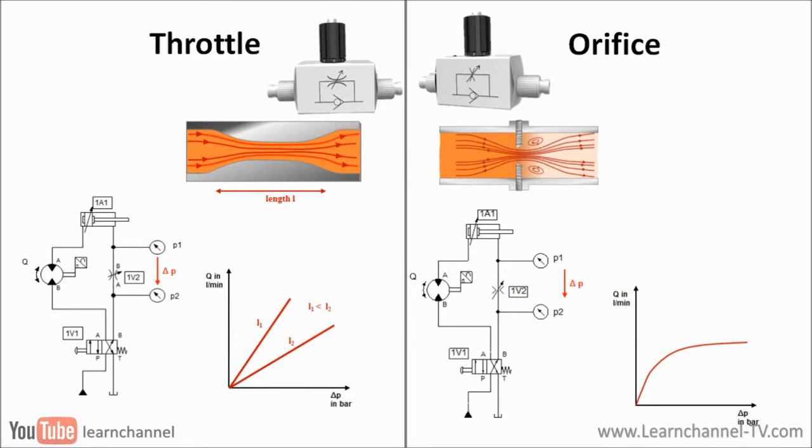Regarding the orifice, the viscous fluid friction is very low and thus the flow rate hardly depends on the viscosity of the oil. This is an advantage. On the other hand, you see a big amount of swirls especially at the exit point of the orifice.